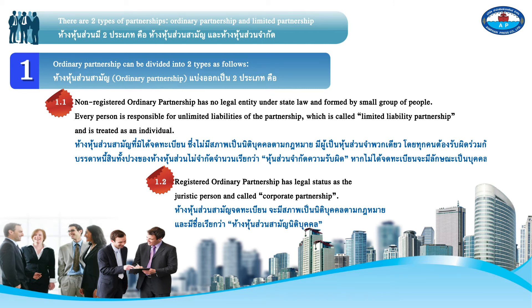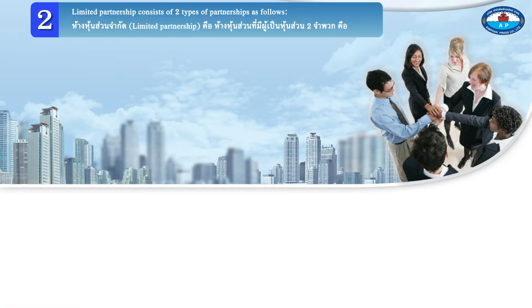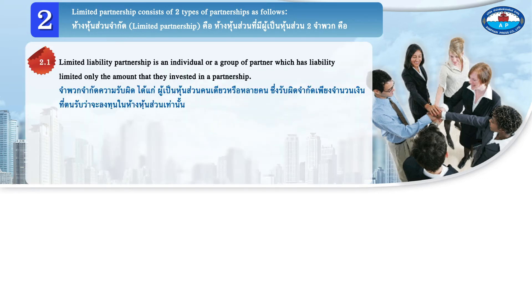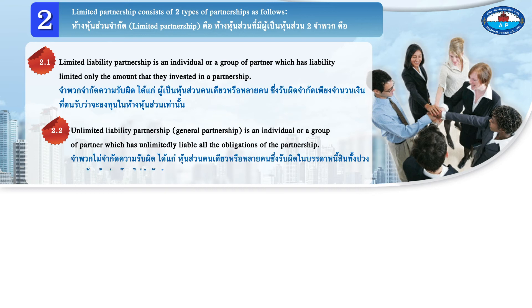1.2 Registered ordinary partnership has legal status as a juristic person and is called a corporate partnership. Type 2, limited partnership, consists of two types: 2.1 limited liability partnership, where an individual or group of partners has liability limited only to the amount they invested; and 2.2 unlimited liability partnership, where an individual or group of partners has unlimited liability for all obligations of the partnership.